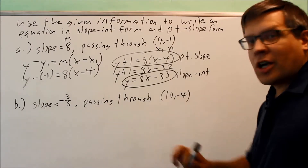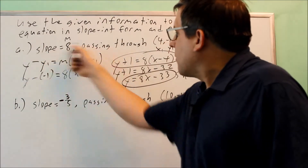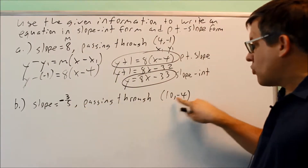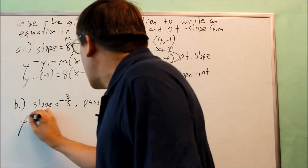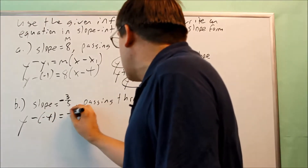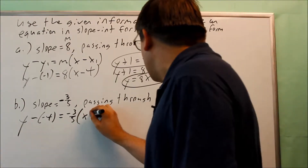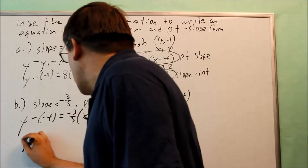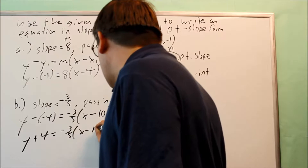Now let's do part B, using the same format. Here's the point-slope formula. The slope m and x1, y1 are plugged in: y minus y1, which is y minus negative 4, equals the slope negative 3/5, times x minus x1, which is x minus 10. Simplifying the double negative gives y plus 4 equals negative 3/5 times (x minus 10).